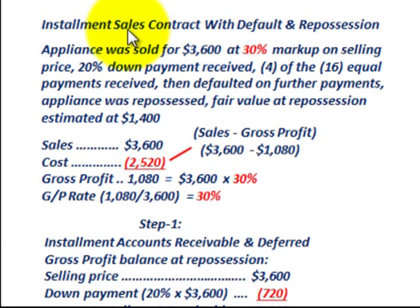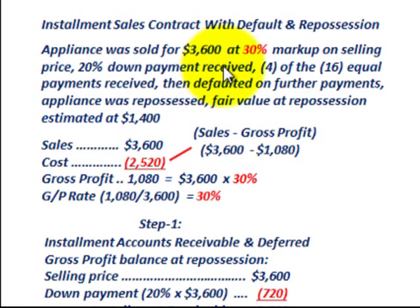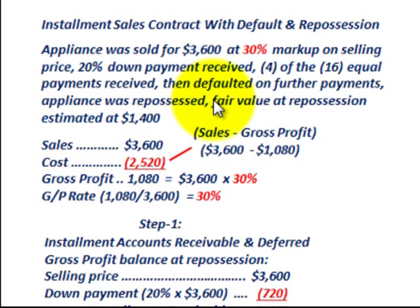We're going over an installment sales contract with a default and a repossession. Household plants were sold by a retail company for $3,600 at a 30% markup of the selling price. 20% was paid down when sold to the purchaser. Then four of the 16 equal payments were received, after which the purchaser defaulted, and the appliance was repossessed with an estimated fair value of $1,400 at repossession.